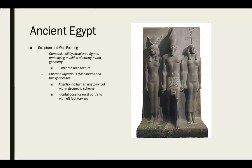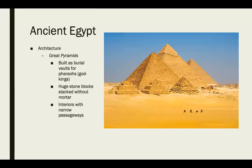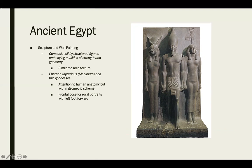Some sculpture and wall paintings from ancient Egypt show a style of compact, solid structural figures that embody qualities of strength and geometry — similar examples appear in their architecture. This is pharaoh Menkaura and two goddesses to his left and right. There is a strong attention to human anatomy, more so than our other abstracted examples, but there's also a geometric scheme. It still feels quite rigid in some areas. The frontal pose with the left foot forward is reserved for royal portraits — a really good example of iconography. The Egyptians are well known for their iconography — every position, head turn, or imagery is probably representing something more than just meets the eye.